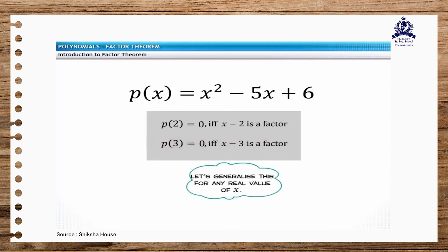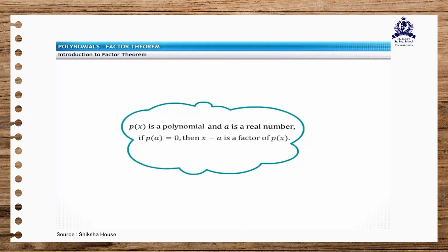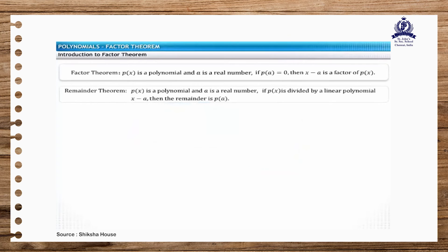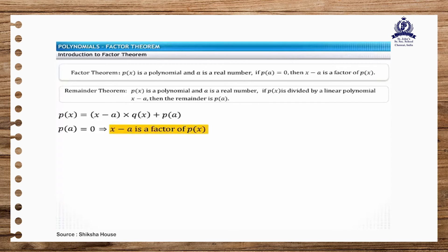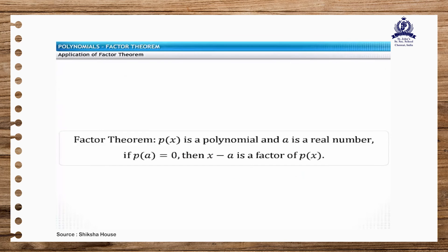Let's generalize this for any real value of x. Consider p of x is a polynomial and a is a real number. If p of a equals 0, then x minus a is a factor of the polynomial. This is known as the factor theorem. This theorem is an extension of the remainder theorem. If the remainder becomes 0, then you can say that x minus a is a factor of p of x. Conversely, if x minus a is a factor of p of x, then p of a equals 0. The factor theorem can be used to factorize a polynomial or verify that a linear polynomial is a factor of another polynomial.